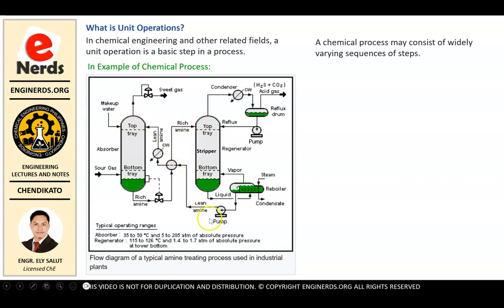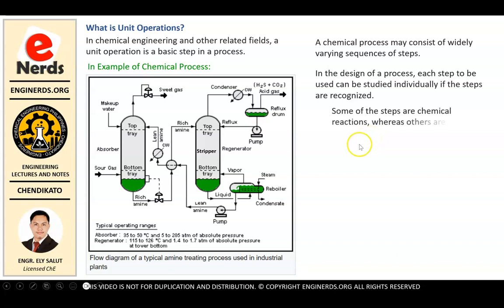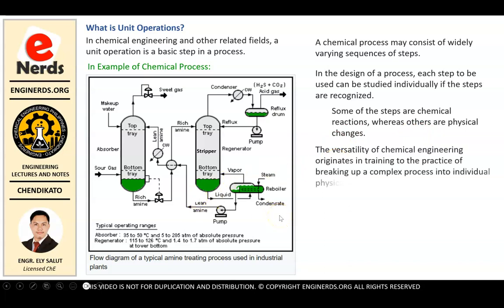In the design of the process, each step to be used can be studied individually if the steps are recognized. That means in unit operation we should be able to study each step in our chemical process. Some of the steps are chemical reactions whereas others are physical changes. The versatility of chemical engineering originates in training to the practice of breaking up a complex process into individual physical steps called unit operations and into chemical reactions.